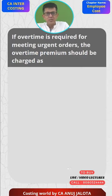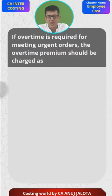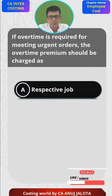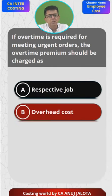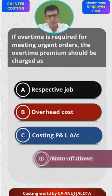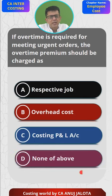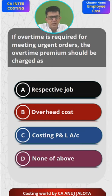The question is: if the overtime is required for meeting urgent orders, the overtime premium should be charged as — A) respective job, B) overhead cost, C) costing P&L, and D) none of the above. Now do remember, if overtime is done for meeting an urgent order...